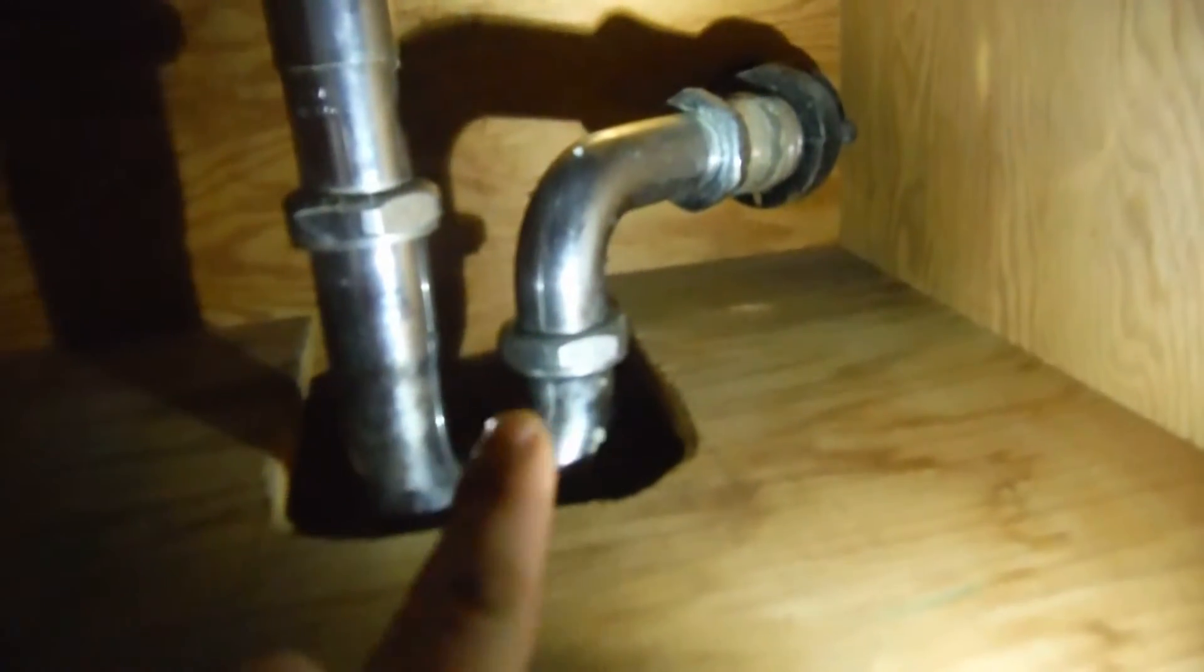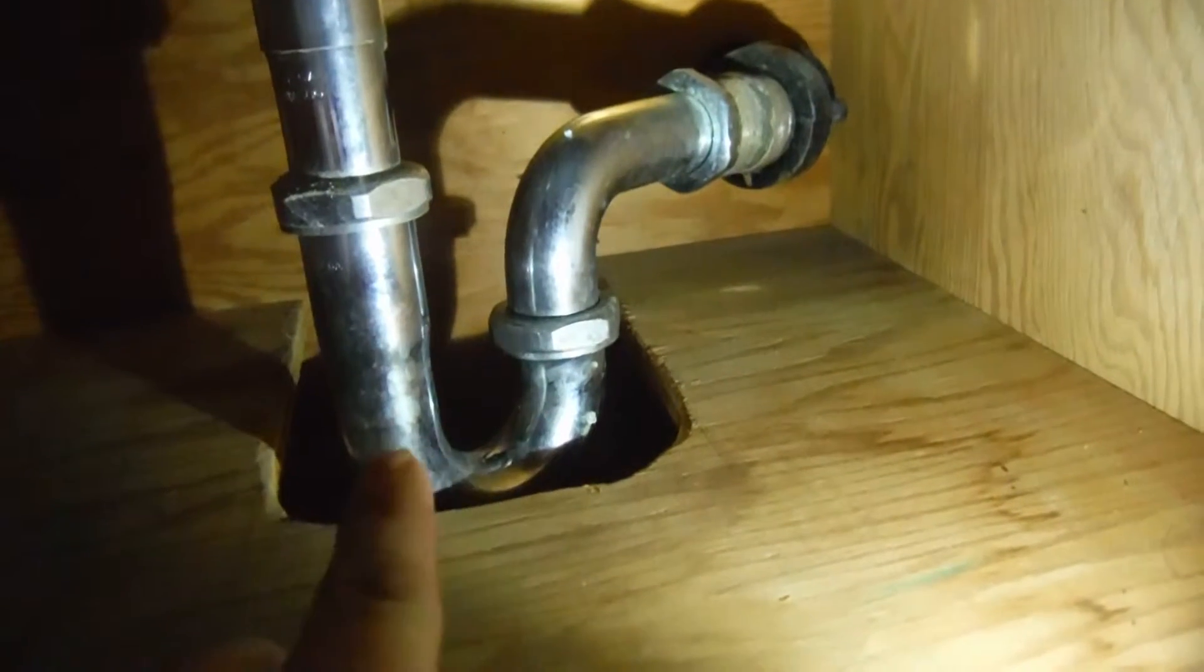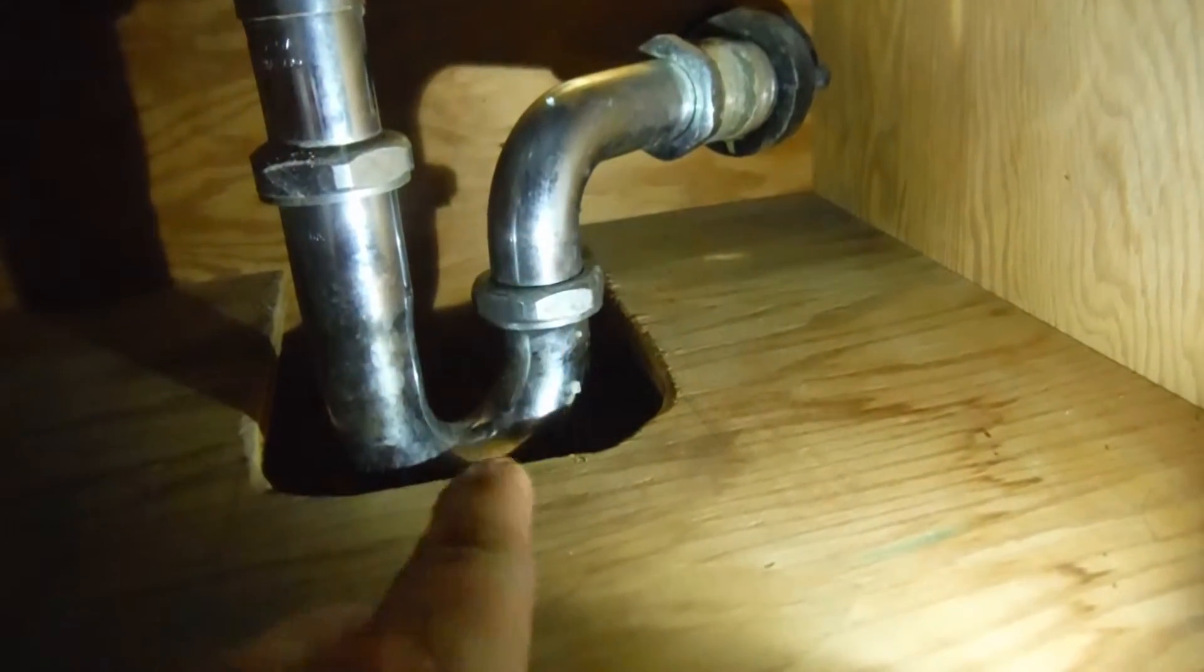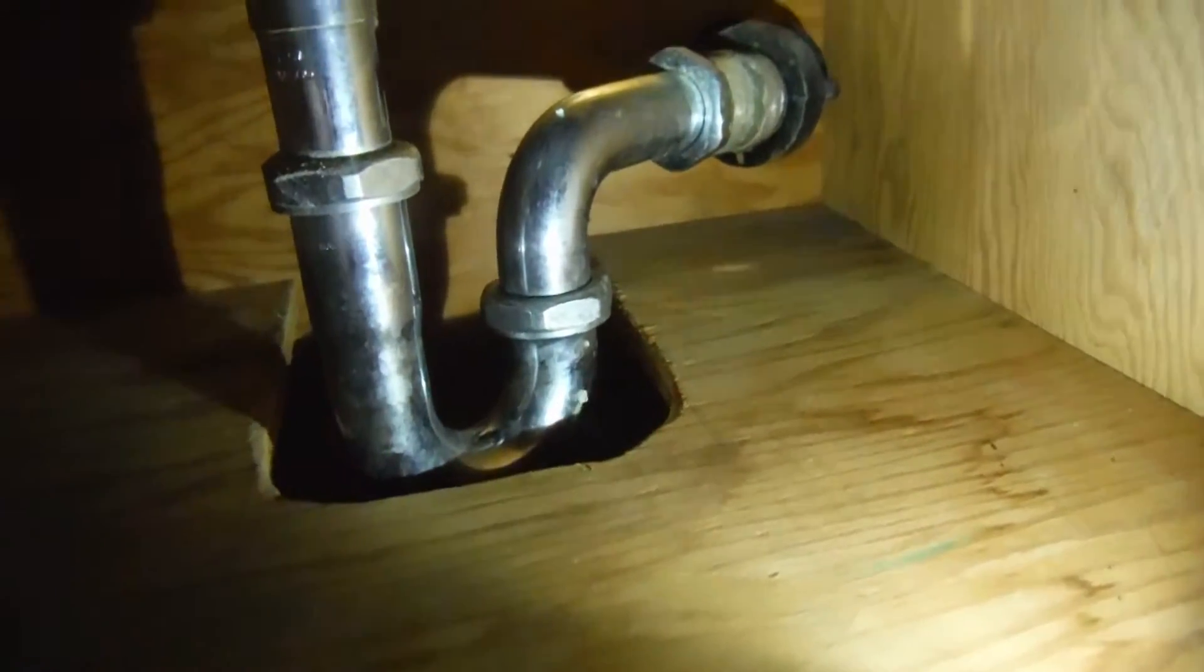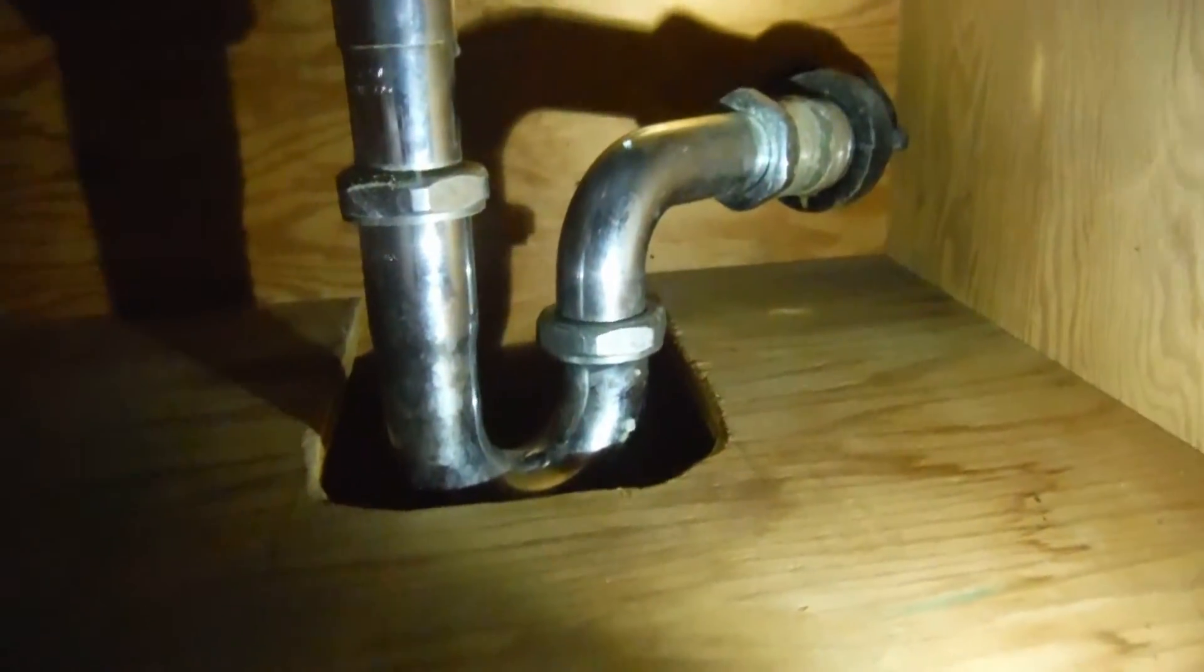You should just have a single P right here. What this does is it allows water to sit here, so this bottom half is full, and it prevents sewer gases from being able to come up through the pipe and into your house.